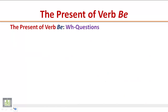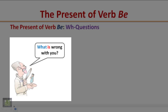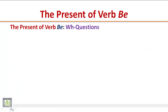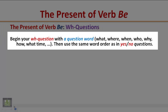The present of verb be: WH questions. Listen to the following short conversation and pay attention to the word order in WH questions. What is wrong with you? Where is my homework? Begin your WH question with a question word like what, where, when, who, why, how, what time, etc., then use the same word order as in yes/no questions.